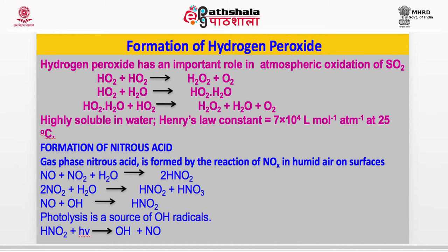Formation of hydrogen peroxide is very important. Hydrogen peroxide is an atmospheric oxidant — it oxidizes sulfur dioxide and some other compounds. It is involved with Fenton's reagent. HO2 + HO2 → H2O2 (bimolecular reaction), or HO2 reacts with H2O to form HO2·H2O and plus HO2 you get H2O2. H2O2 is highly soluble; its Henry's law constant is 10^4 mol/L/atm at 25°C.